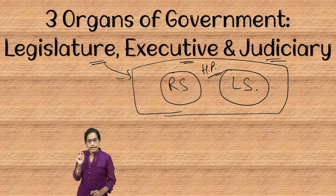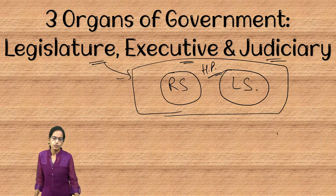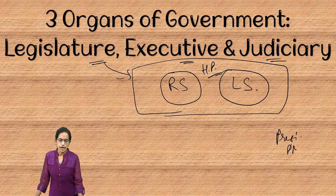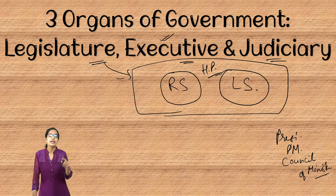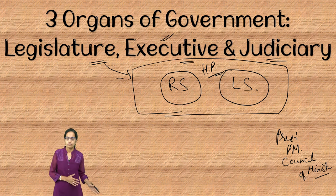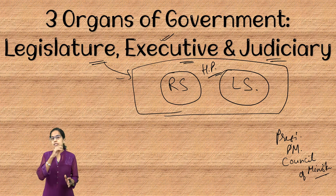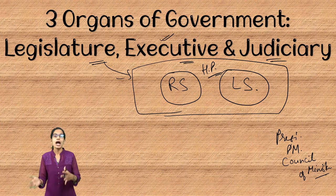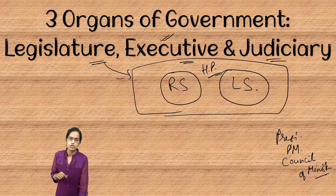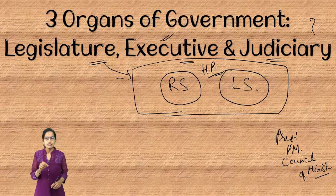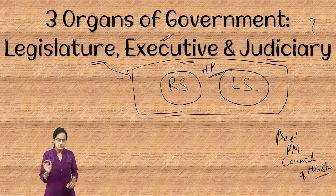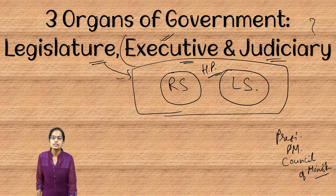Within the legislature, we have the executive. The executive comprises the president, the prime minister, and the council of ministers who take collective responsibilities. Along with the bureaucracy and administrative officers, they form the executive. The executive's role is to execute whatever laws are made by the legislature. The judiciary settles any dispute that arises once a law is passed. Taking charge of administration is the role of the executive.